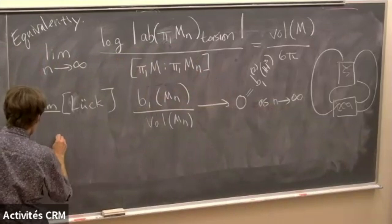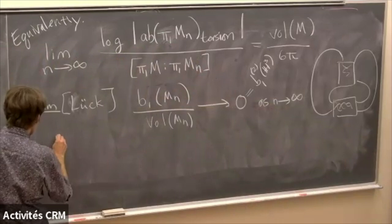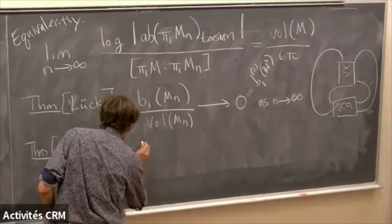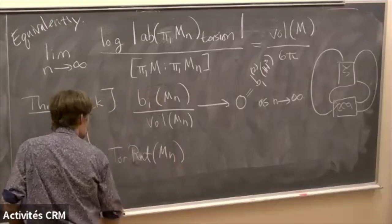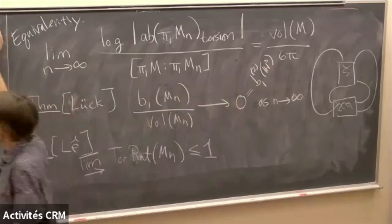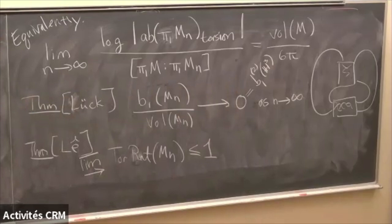I'm putting up a theorem. Thang Lê proved that in this situation, the lim sup of the torsion ratio of these manifolds is at most one — for any co-final sequence of three-manifolds. So this is really the fastest the torsion could possibly grow.